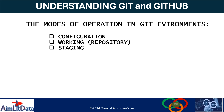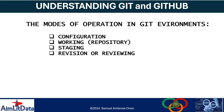Staging involves adding the files you have worked on to a queue in memory for them to be committed. From there you can view your work, see what you have done so far, review, delete, modify, or continue working. Revision is very important because it helps you decide whether what you have done is good or not — you can tweak, adjust, or even delete what you have staged so far.